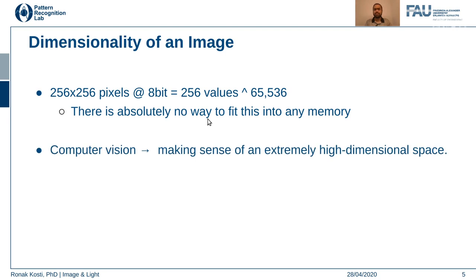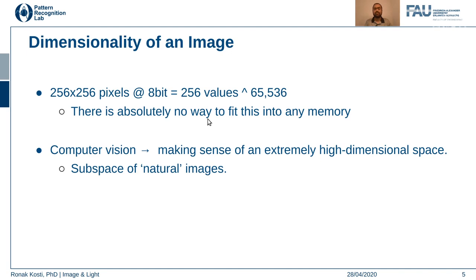So what does computer vision do? Computer vision tries to make sense of this high-dimensional space, and within all that noise there are some patterns which are interesting to us — like an image of the Eiffel Tower. If you select specific values for each pixel you can generate meaningful images, but it's impractical. Computer vision only deals with a subspace of all those possible combinations.